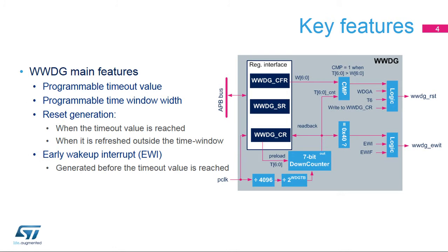The Window Watchdog offers several features. The user can program the timeout value and the window width according to application needs. It can generate a reset under two conditions: when the down-counter value becomes less than or equal to 0x3F, or when the watchdog is refreshed outside the time window. It can generate an early wake-up interrupt when the down-counter reaches 0x40. This interrupt can be used to reload the down-counter to avoid a reset, or to manage system recovery and context backup operations.